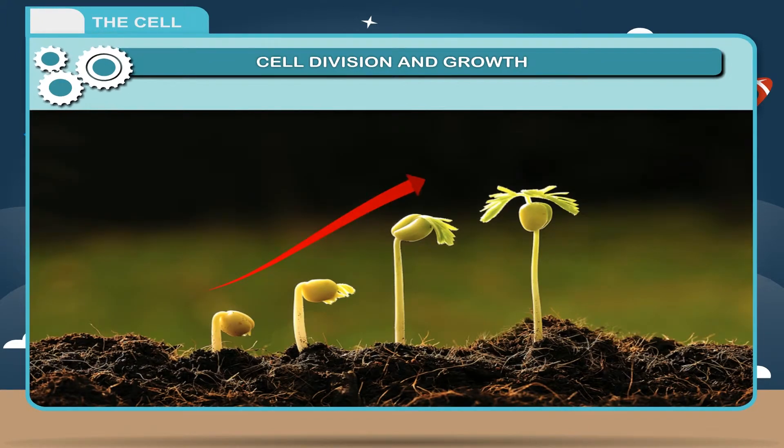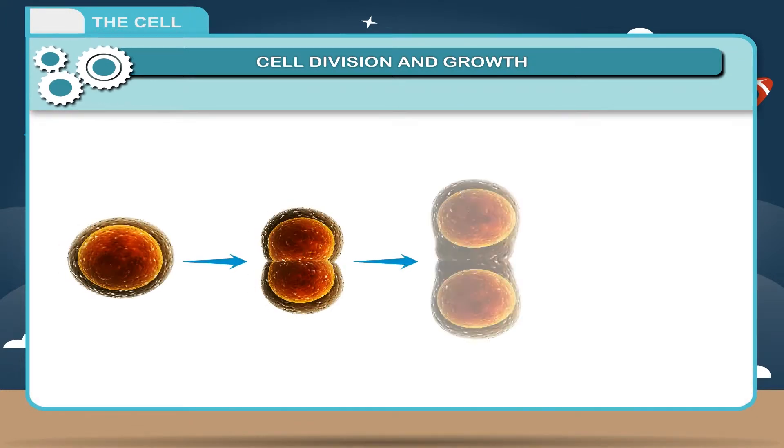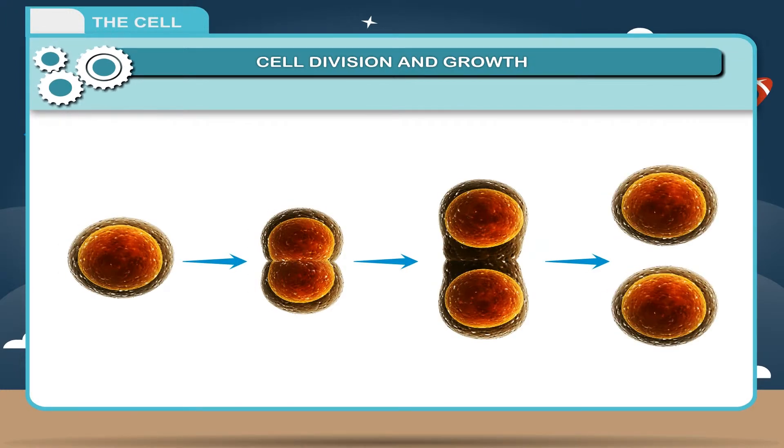Plants and animals grow in size with the increase in number and size of the cells. Increase in cell number occurs by cell division.